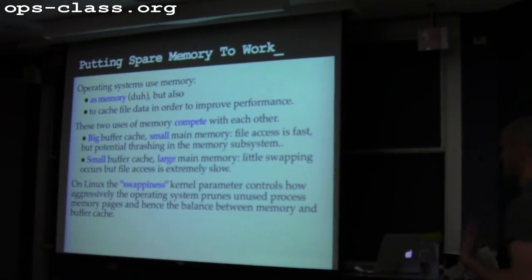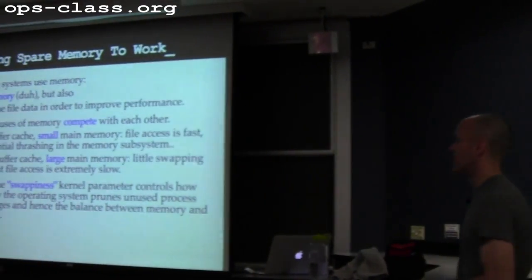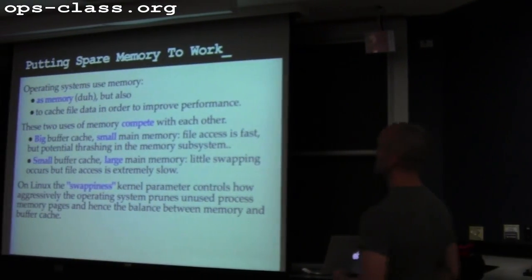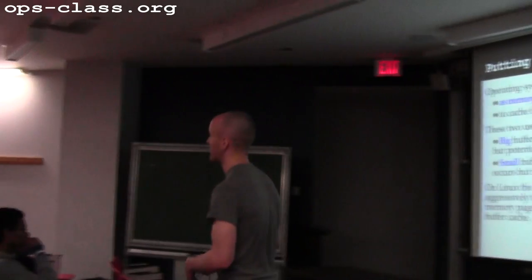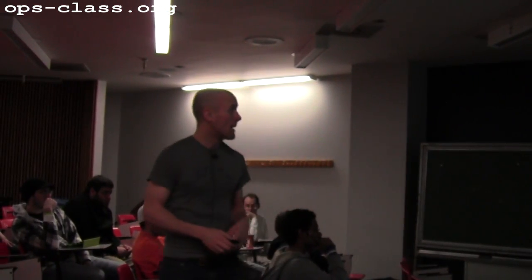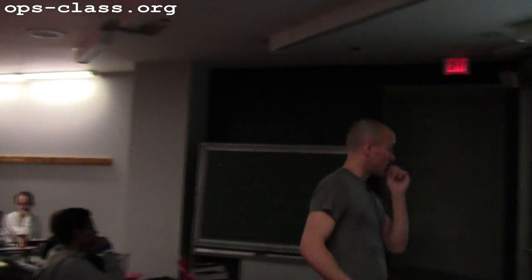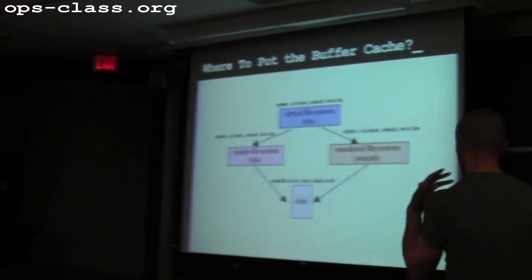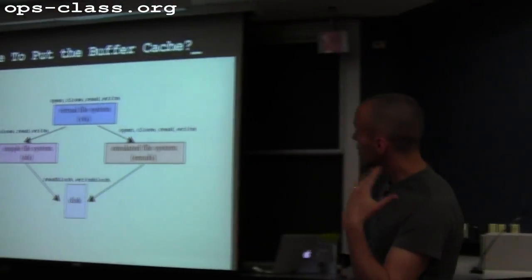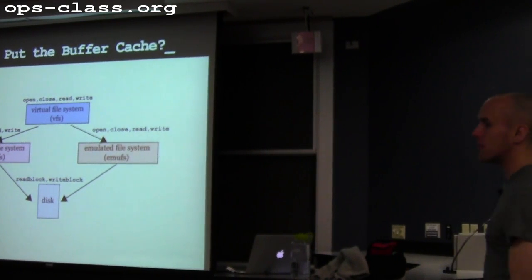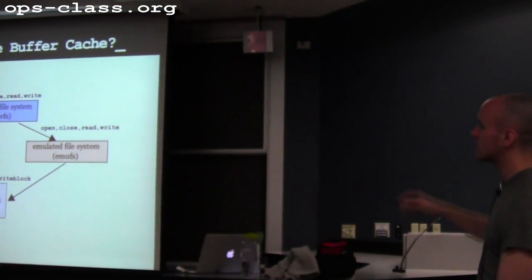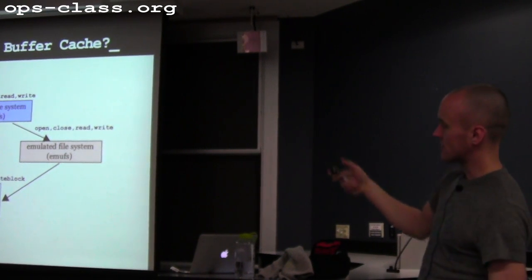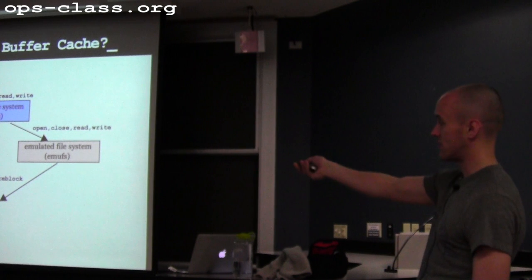On Linux, there's a swappiness parameter that has a fantastic name, and as far as I can tell is a little bit mysterious in how it actually operates. So the last thing we got to briefly was a discussion of where we're going to put the buffer cache. What were my two options?